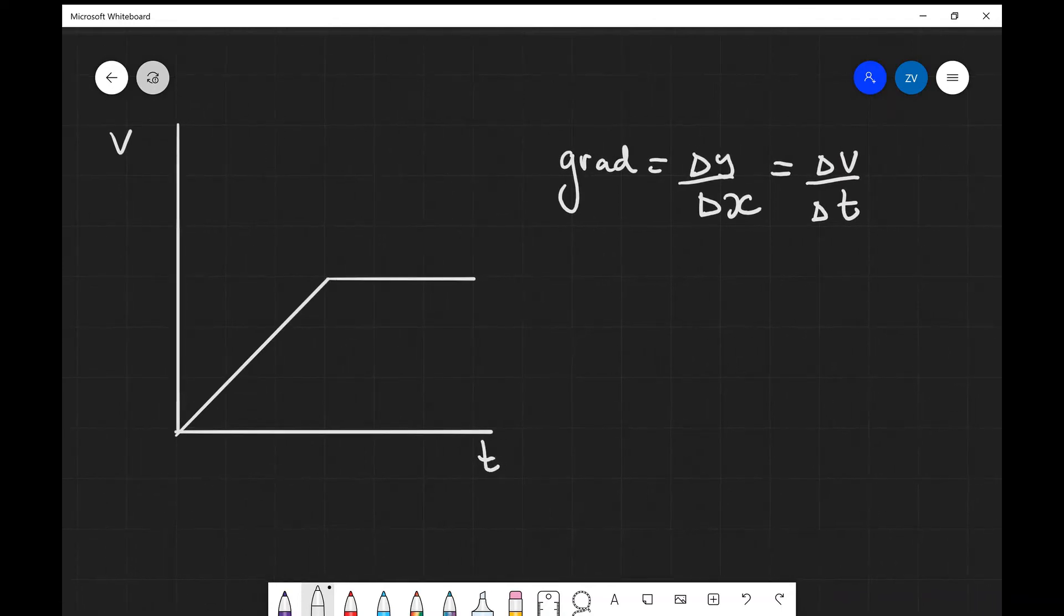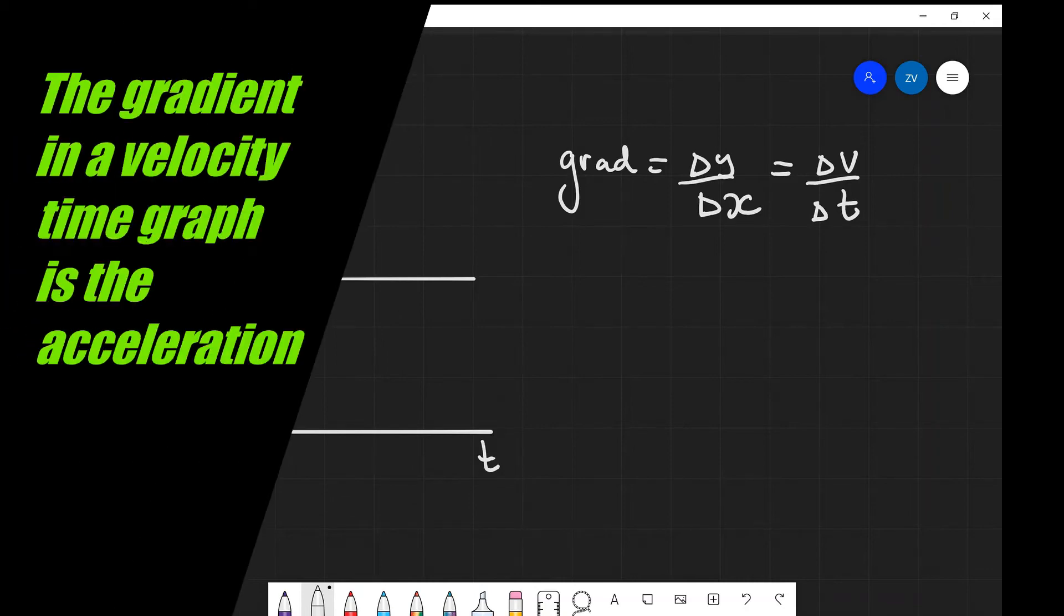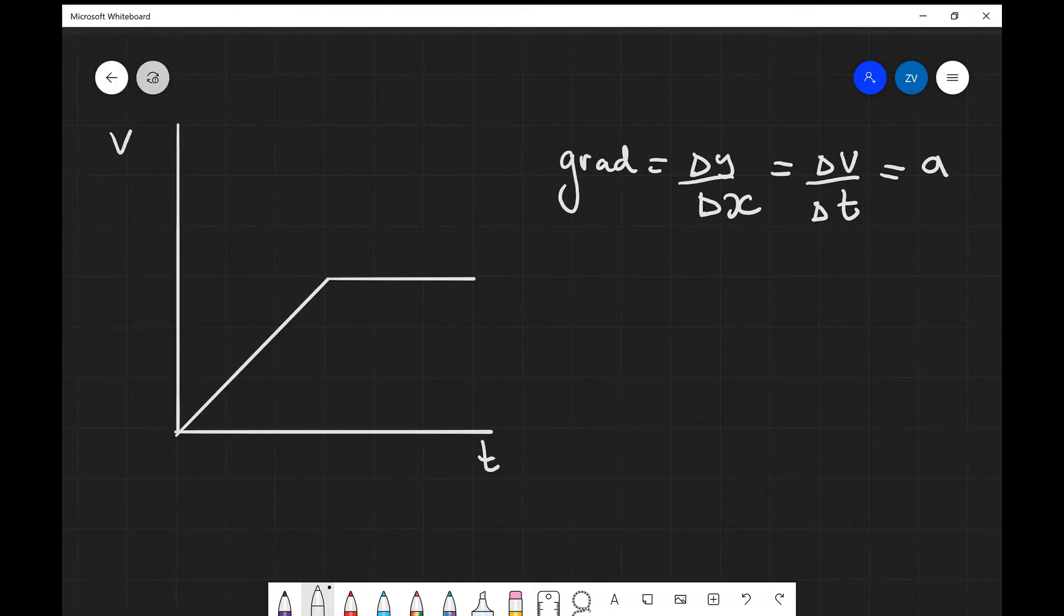So the gradient in a velocity against time graph is your change in velocity divided by the change of time, which is also the rate of change of velocity. Well, hang on a minute. This is actually the very definition of acceleration. So the gradient in a velocity against time graph is your acceleration.